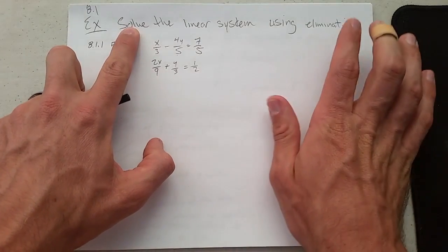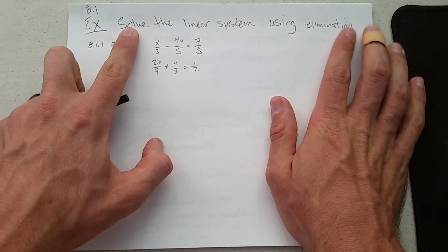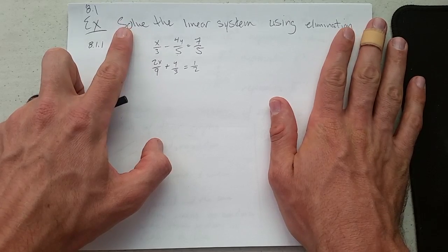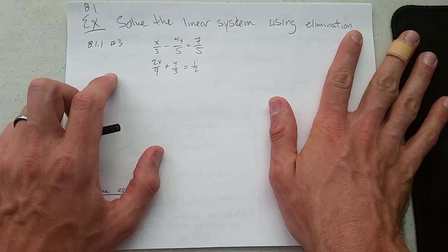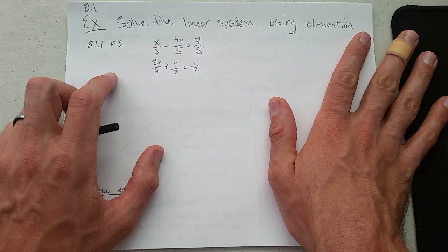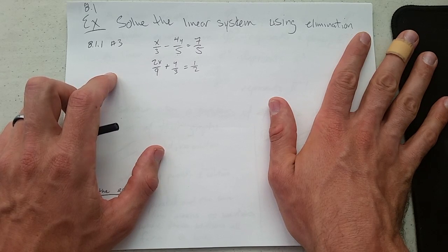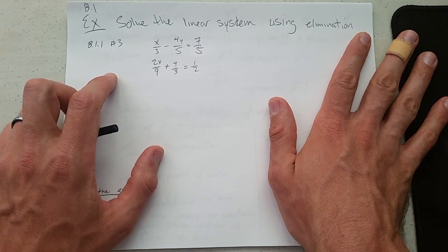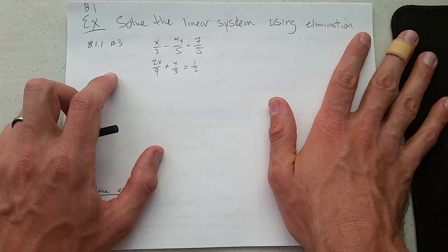We're going to solve this linear system using elimination. Generally, the first method you learn is substitution, but we're going to skip substitution because elimination is much closer to Gaussian elimination that we'll learn very soon with matrices.